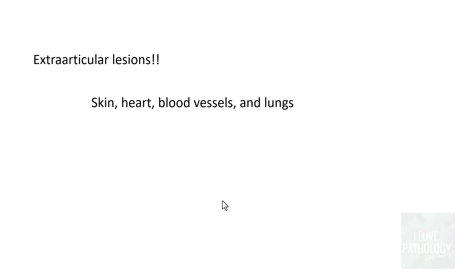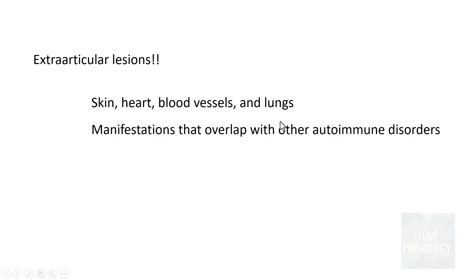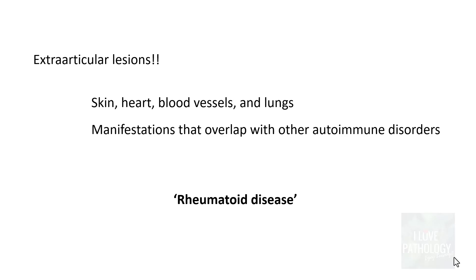It's not just articular lesions — RA can also involve extra-articular lesions, particularly the skin, heart, blood vessels, and lungs. Because these extra-articular manifestations overlap with other autoimmune disorders, many authors prefer the term 'rheumatoid disease' rather than rheumatoid arthritis alone.